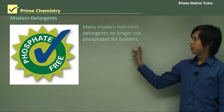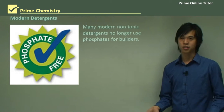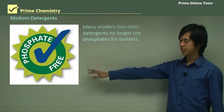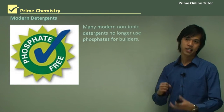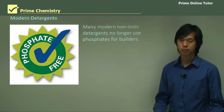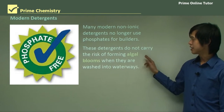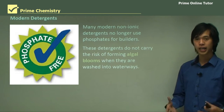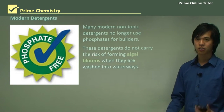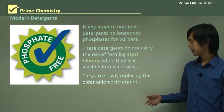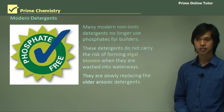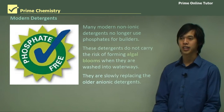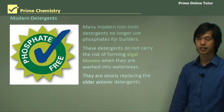Many modern non-ionic detergents no longer use phosphates for builders, because we don't want them to cause eutrophication. So we have a phosphate-free label on them — similar to chickens being hormone-free. These detergents do not carry the risk of forming algal blooms when washed into waterways, because they don't contain phosphate. They are slowly replacing the older anionic detergents that contain sulfates.